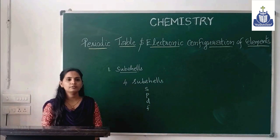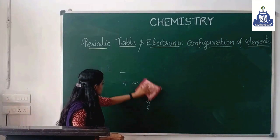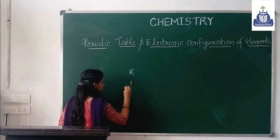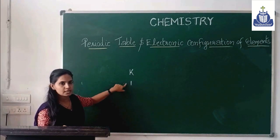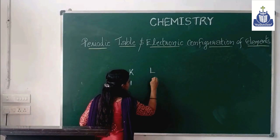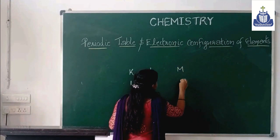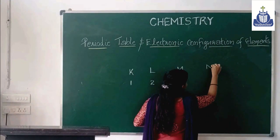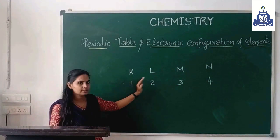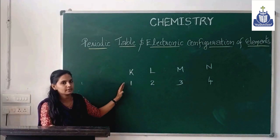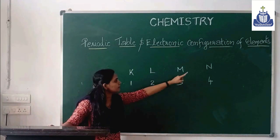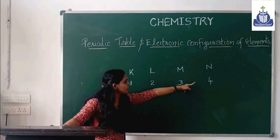The K shell is the first shell, L shell is the second shell, M shell is the third shell, and N shell is the fourth shell. The number of subshells in each shell is equal to its shell number. So K shell has 1 subshell (S), L shell has 2 subshells (S and P), M shell has 3 subshells (S, P, D), and N shell has 4 subshells (S, P, D, F).